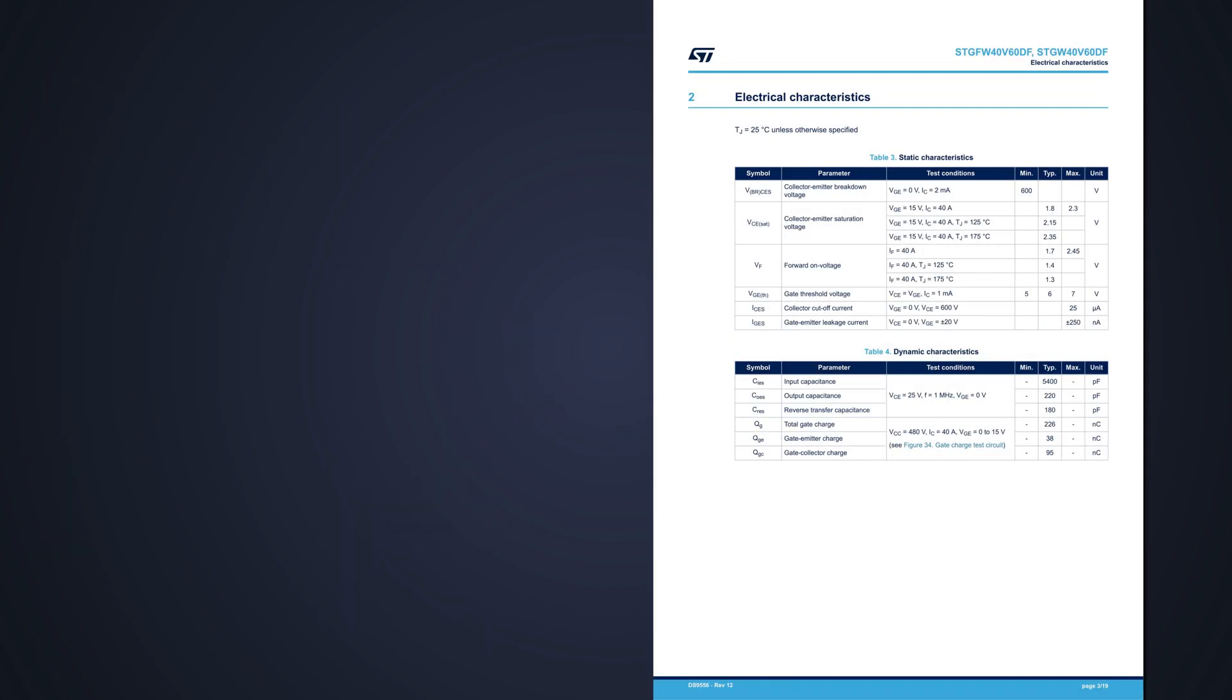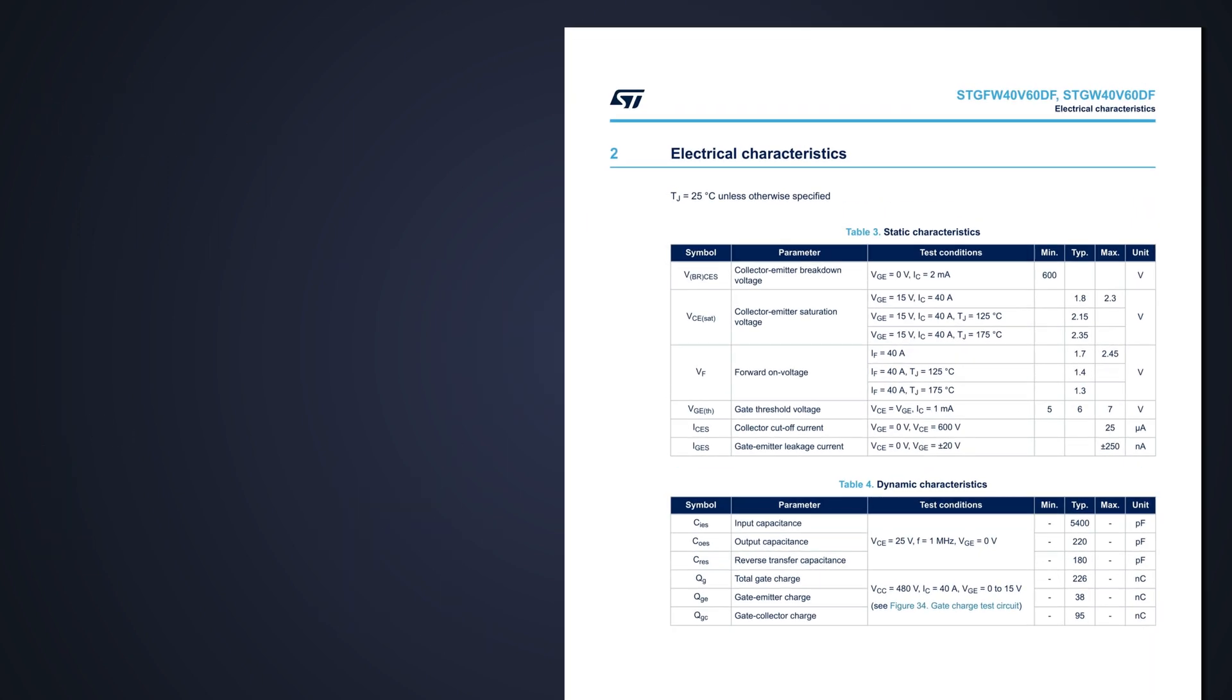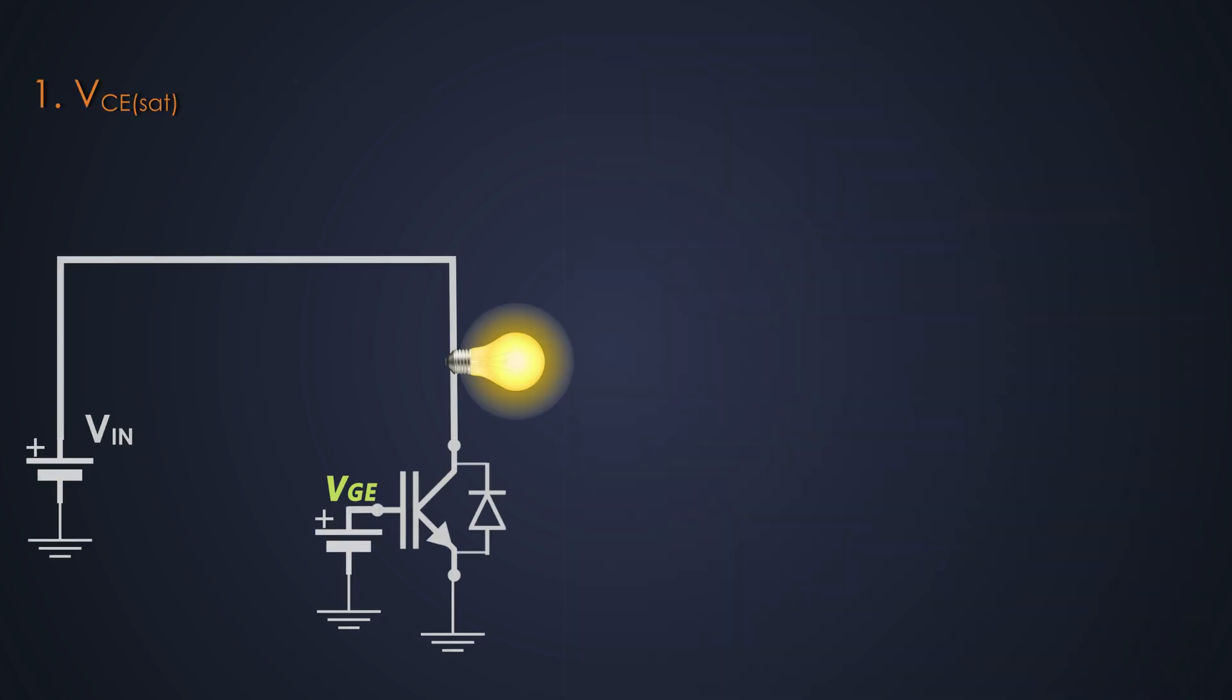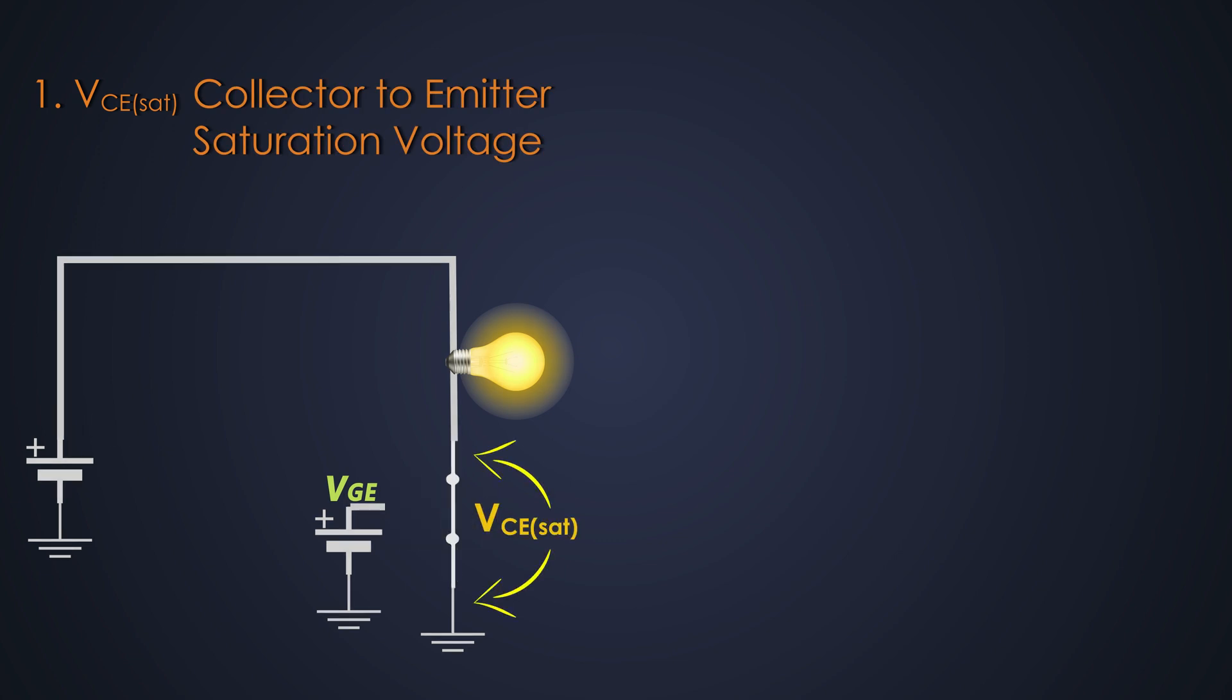The next category of the parameter of the IGBT is static characteristics. We will start with the VCSAT, also known as collector-to-emitter saturation voltage. This is the on-state collector-to-emitter voltage drop. And it represents the IGBT power dissipation during the conduction.